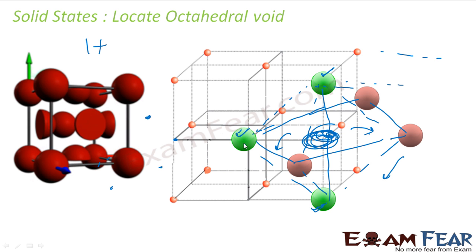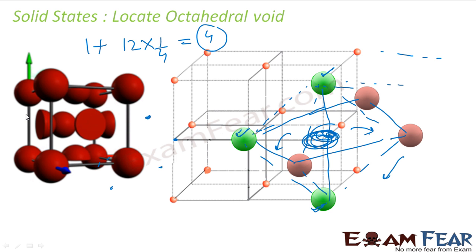One is contributed by the cell we are talking about; these three are contributed by three different cells. So what we have got is 12 octahedral voids because there are 12 edges, but each of these is shared by four, so the net octahedral voids in this particular cell will be 3 from the edges plus 1 from the center, giving a total of 4. The number of octahedral voids is 4.